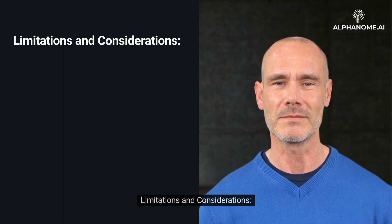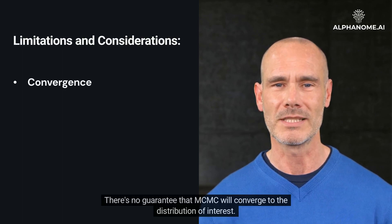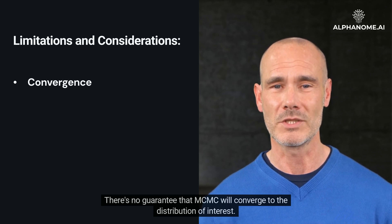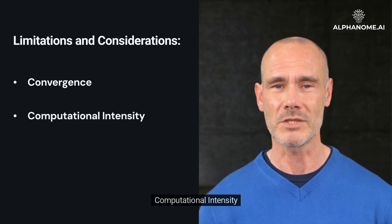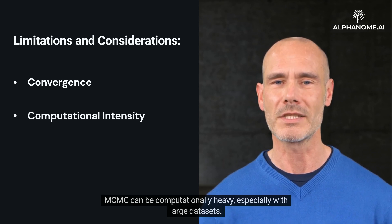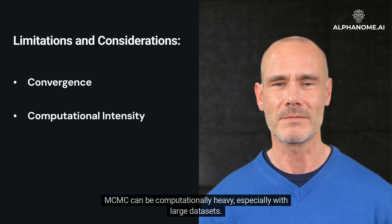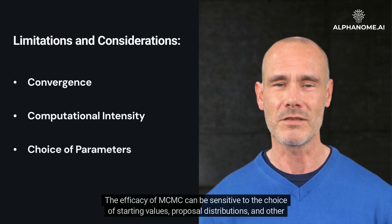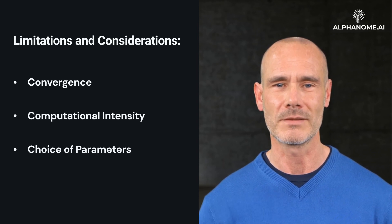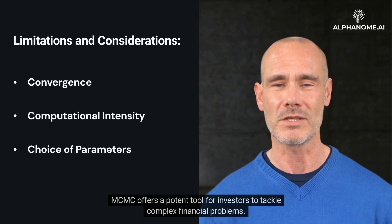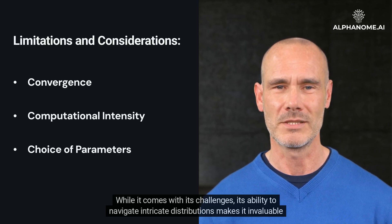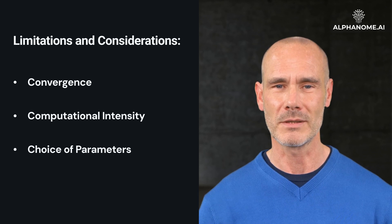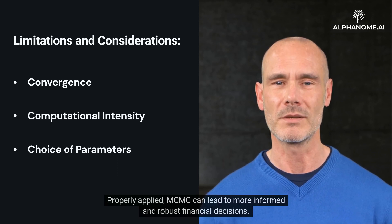Limitations and considerations. Convergence: there's no guarantee that MCMC will converge to the distribution of interest. Diagnostics, like the Gelman-Rubin statistic, can help assess convergence. Computational intensity: MCMC can be computationally heavy, especially with large datasets. Choice of parameters: the efficacy of MCMC can be sensitive to the choice of starting values, proposal distributions, and other parameters. MCMC offers a potent tool for investors to tackle complex financial problems. While it comes with its challenges, its ability to navigate intricate distributions makes it invaluable in the decision-making arsenal. Properly applied, MCMC can lead to more informed and robust financial decisions.